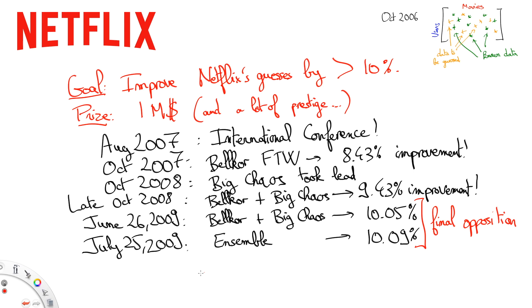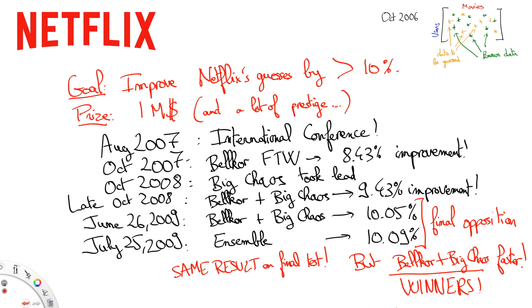They would now be judged by a last test set. Somehow, Bellcore's Pragmatic Chaos and Ensembl achieved the same result. The rule, however, crowned Bellcore's Pragmatic Chaos because they had submitted their results some 20 minutes earlier. It was close, very very close.